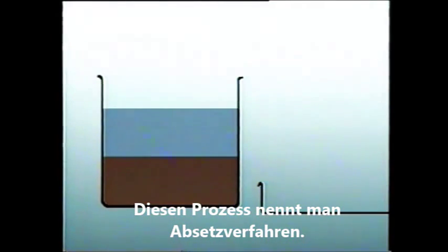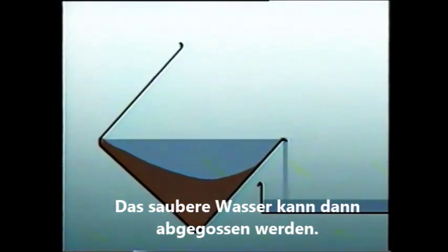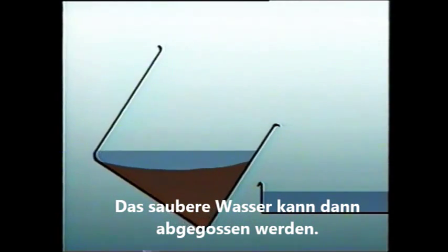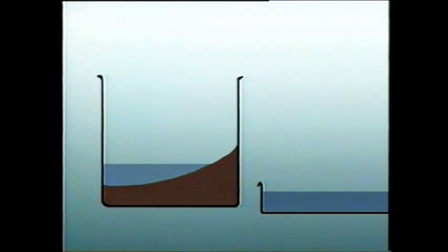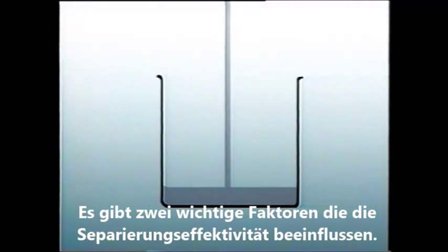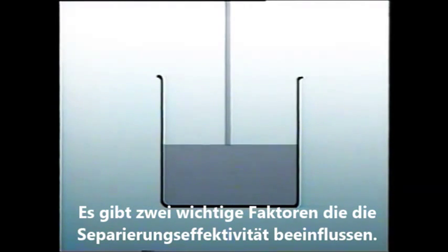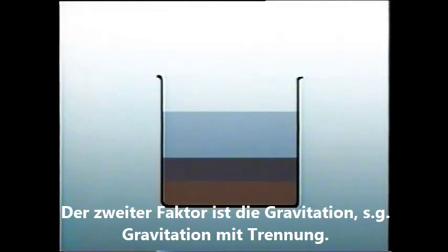This process is called batch settling. The clear water can then be collected by pouring it carefully over the edge — by decanting it. There are two major factors that influence the efficiency of the separation process: one is the time allowed, the other is gravity, or more precisely, gravitational acceleration.